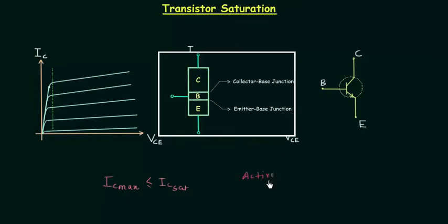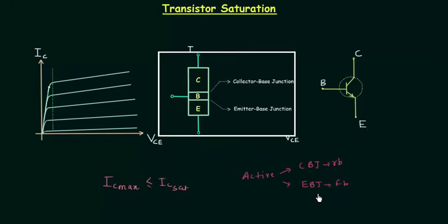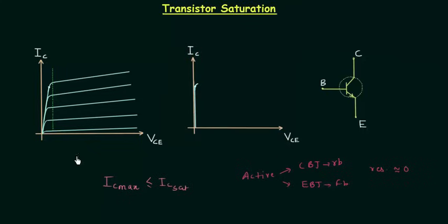In the active region, the collector-base junction is reverse biased and the emitter-base junction is forward biased. But in the saturation region, the collector-base junction is forward biased and the resistance offered is nearly equal to zero, as we will see from the output characteristics.